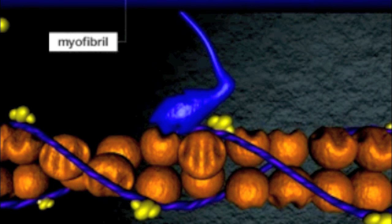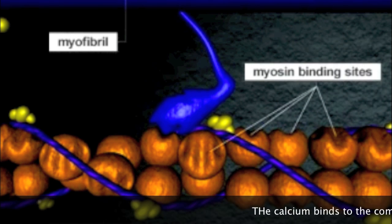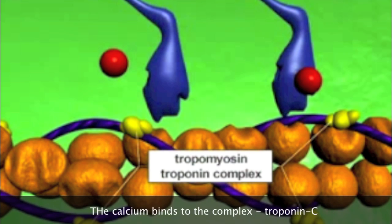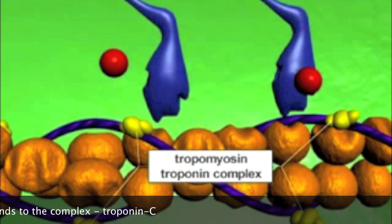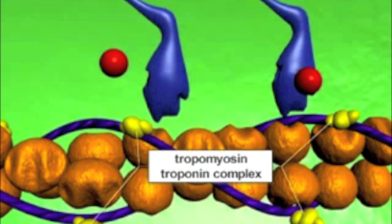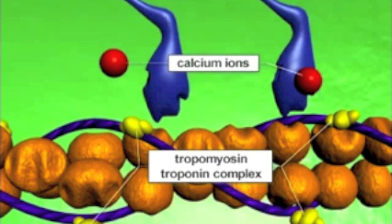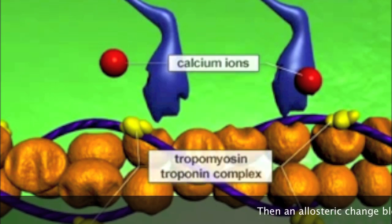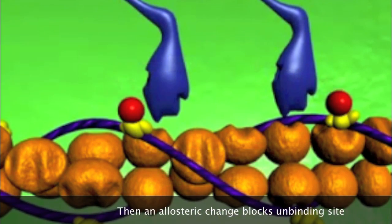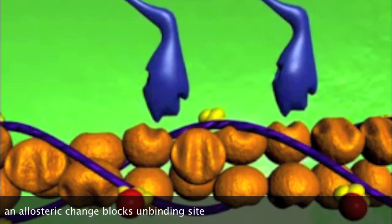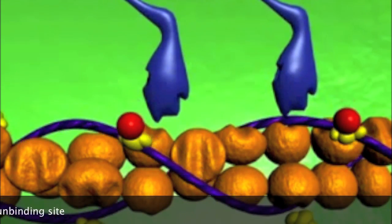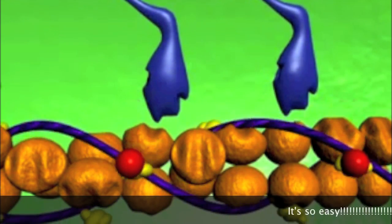The calcium binds to troponin C on the filaments of the myofibrils. Then an allosteric change unblocks the binding sites. It's so easy.